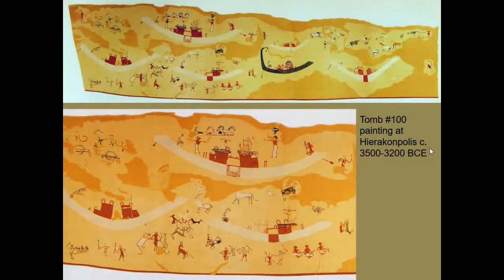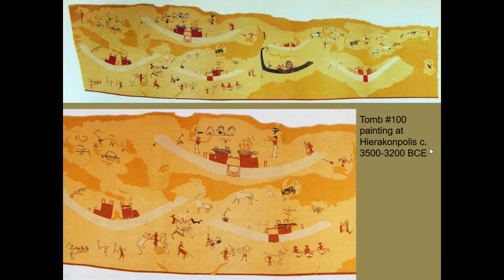A couple of things to be aware of with Egyptian artwork: so much of it is dependent upon the Nile River itself, because the flooding of the Nile provides the silt that fertilizes land, allows for architecture, and allows for permanent settlements.